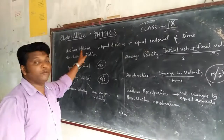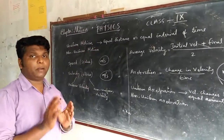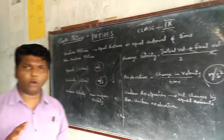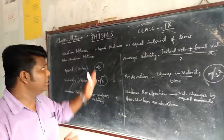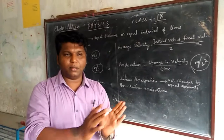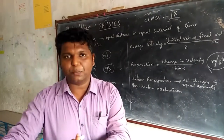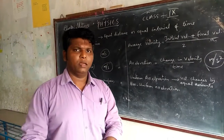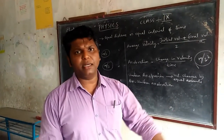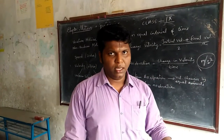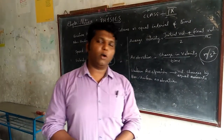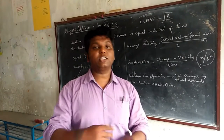Today we are going to study two types: uniform motion and non-uniform motion. Uniform motion means if a particular object is covering equal distance in equal intervals of time. For example, in five minutes if one object is moving one kilometer, and after five minutes again it is moving one more kilometer, and after five minutes again one more kilometer — then we can say that object is in uniform motion.